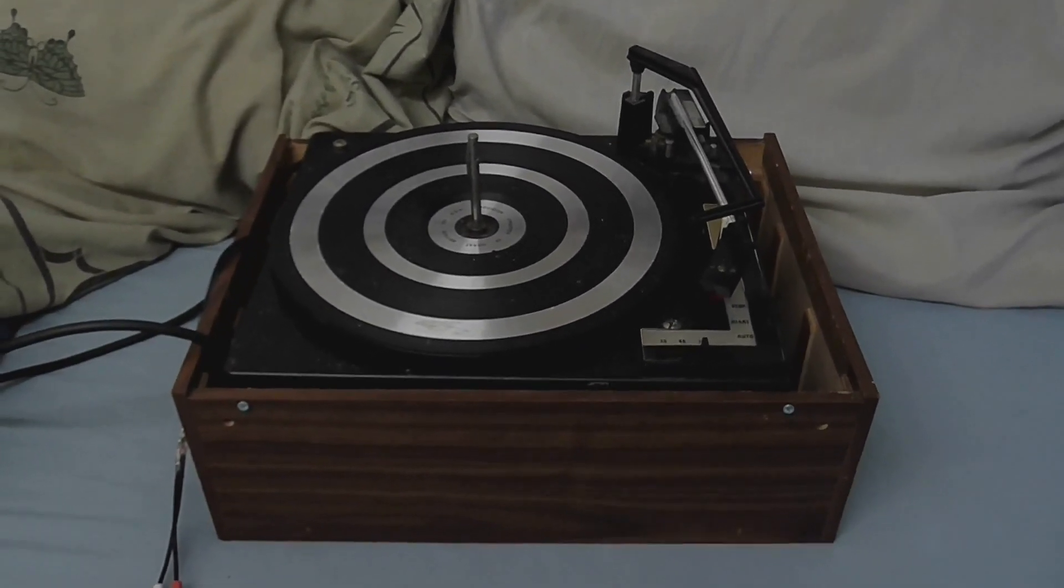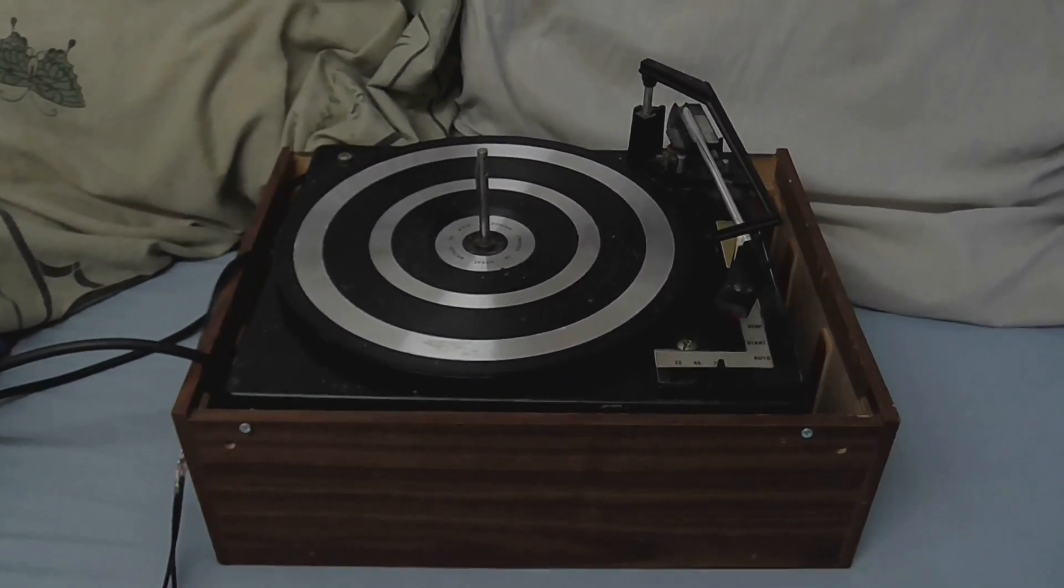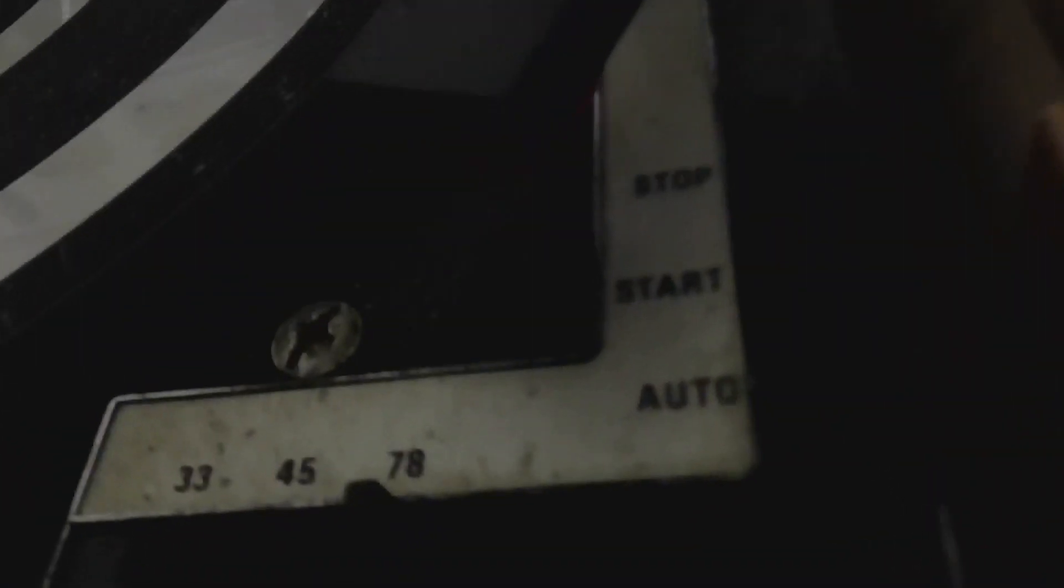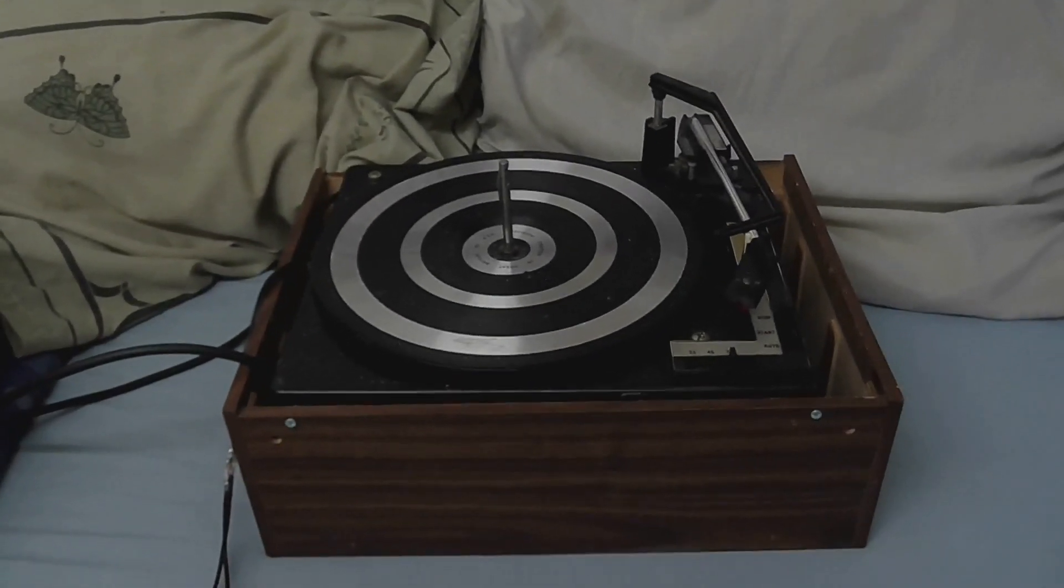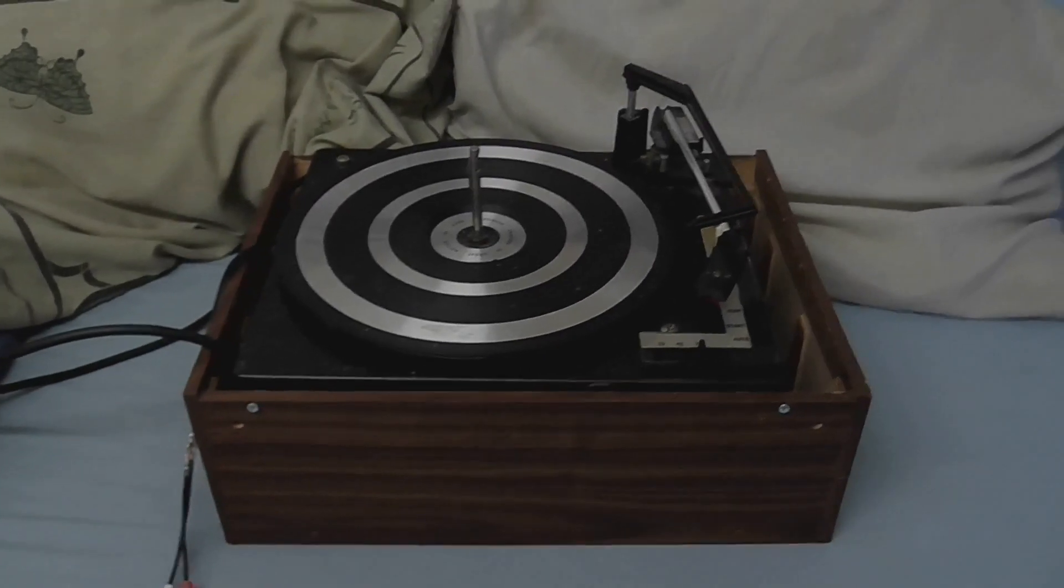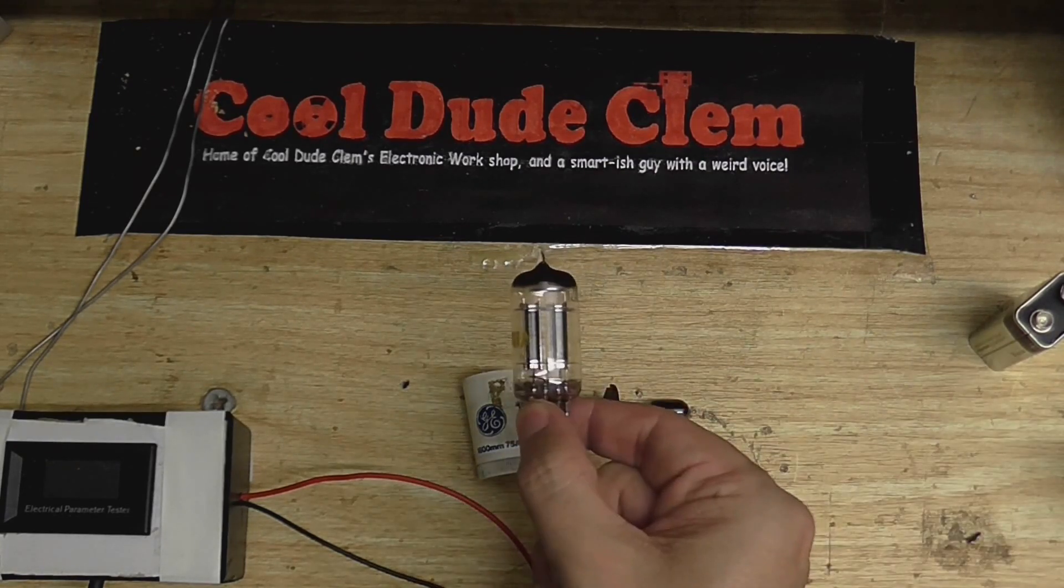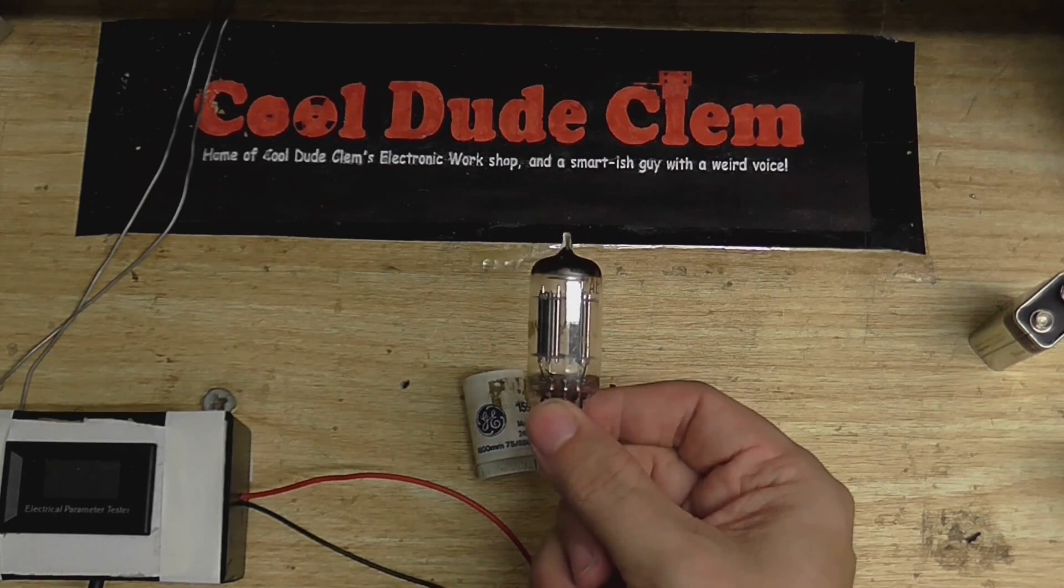So what I want to do is make, not exactly a preamp, but an impedance matching circuit so I can connect this ceramic cartridge up to a normal amplifier without it sounding all tinny and baseless. And I think I'm going to use this bench could really do with a bit of a clear-up. I think I'm going to use you.